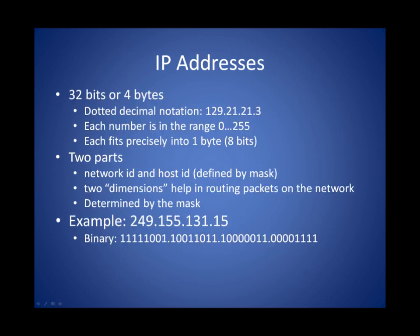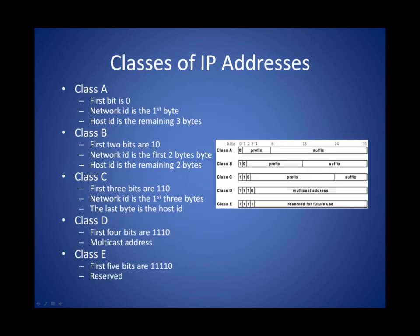Every node operating on the network has an IP address. The IP address is 32 bits, or 4 bytes in length, and is organized into what we call dotted quad notation — a set of four base-10 numbers separated by decimal points. The base-10 numbers range from 0 to 255, and machines convert them to binary. Every IP address has two parts: a network portion and a host portion, and these are determined by the network mask, as we'll see in a minute.